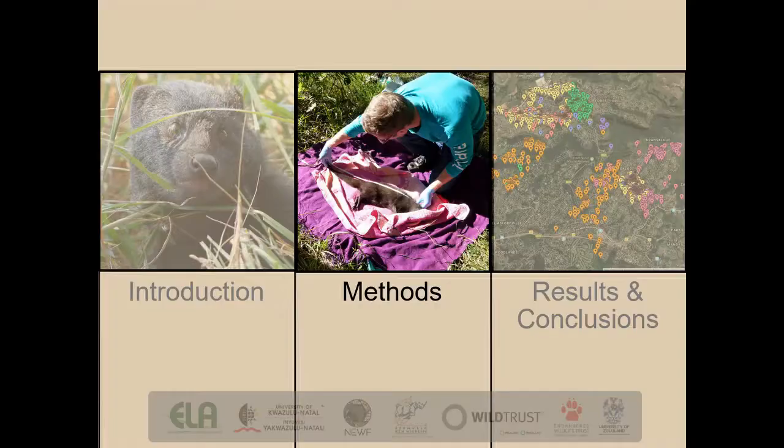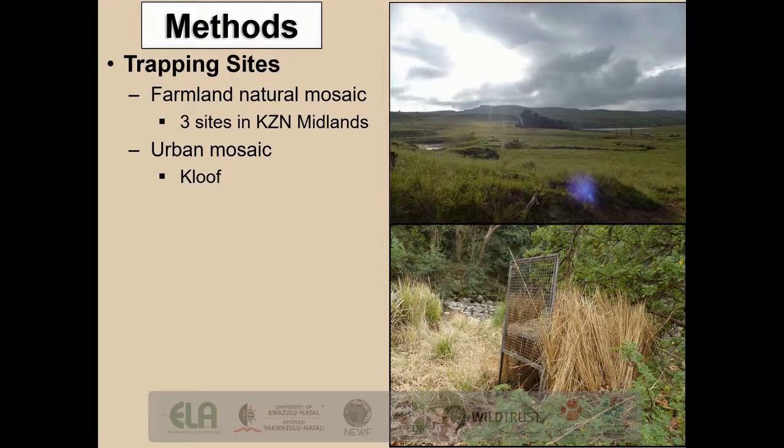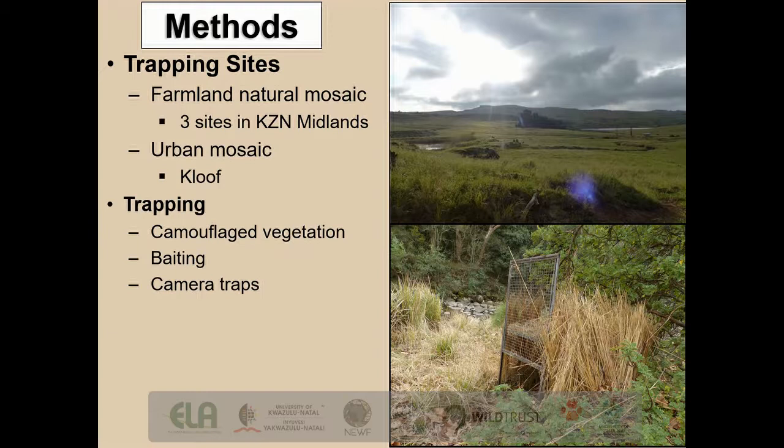Moving on to the methodology we utilized during this study. Trapping sites were located within the farmland natural mosaic of the KZN Midlands, namely Mvorna, Tilletalem, and Dal Kru. Kluf represented our urban mosaic site. These sites were suitable as they had large enough populations of water mongoose and large grey. We used walk-in traps for this study. These traps were camouflaged with vegetation from the surrounding area and baited with chicken hearts and chicken intestines. A camera trap was located at the front of the trap to capture any other carnivore species that were interested in our bait.